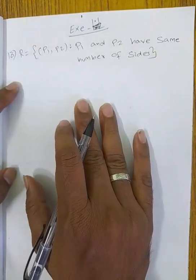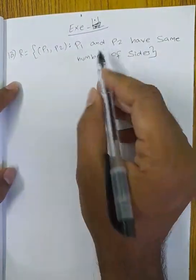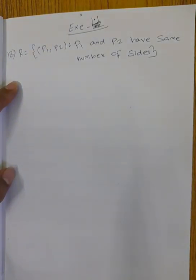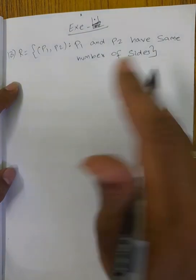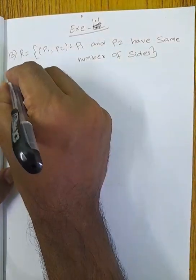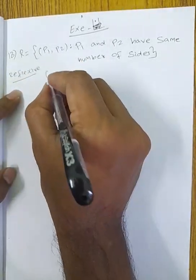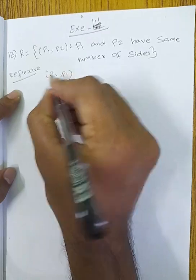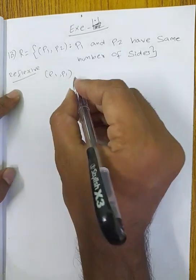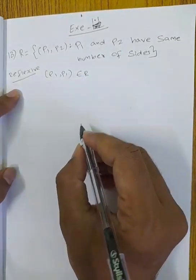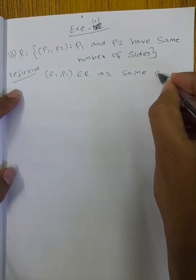First, reflexive: reflexive means (A, A) belongs to R. So (P1, P1) belongs to R means P1 and P1 are the same polygon. Same polygons have the same number of sides, so (P1, P1) belongs to R. Therefore R is reflexive.